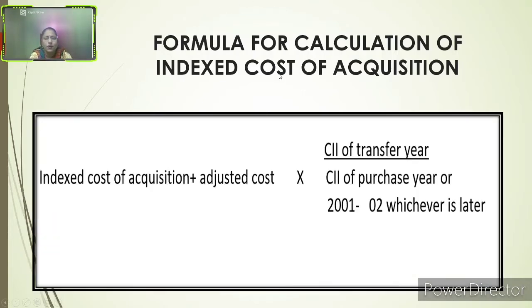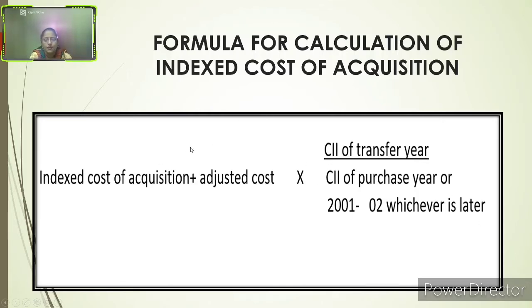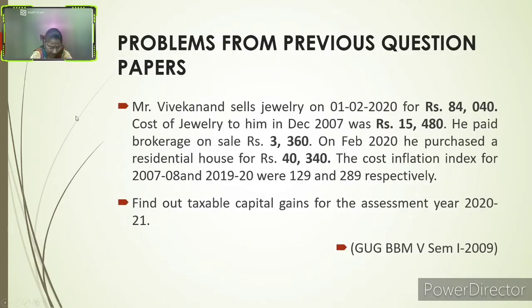The important formula for calculation of indexed cost of acquisition is: Indexed Cost of Acquisition = (Adjusted Cost of Acquisition + Cost of Improvement, if any) × (Cost Inflation Index of Transfer Year ÷ Cost Inflation Index of Purchase Year or 2001-02, whichever is later). This is the key formula for the calculation of indexed cost of acquisition.